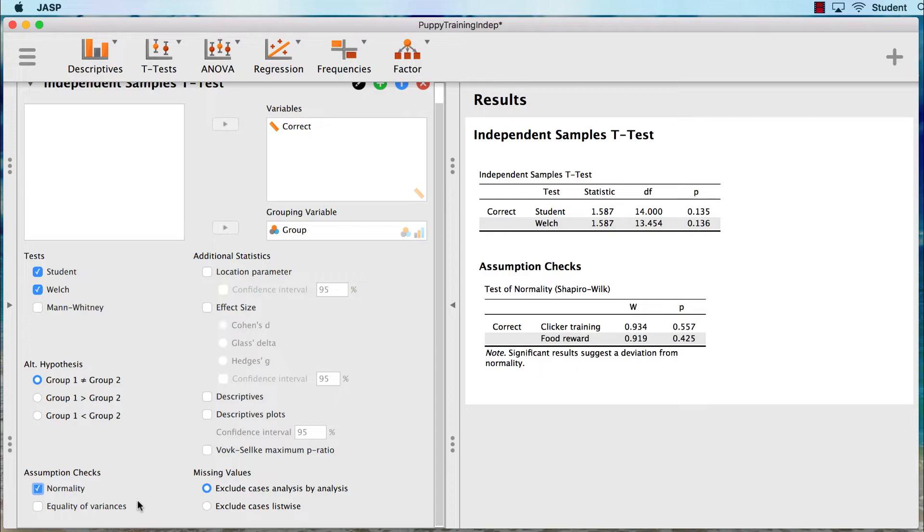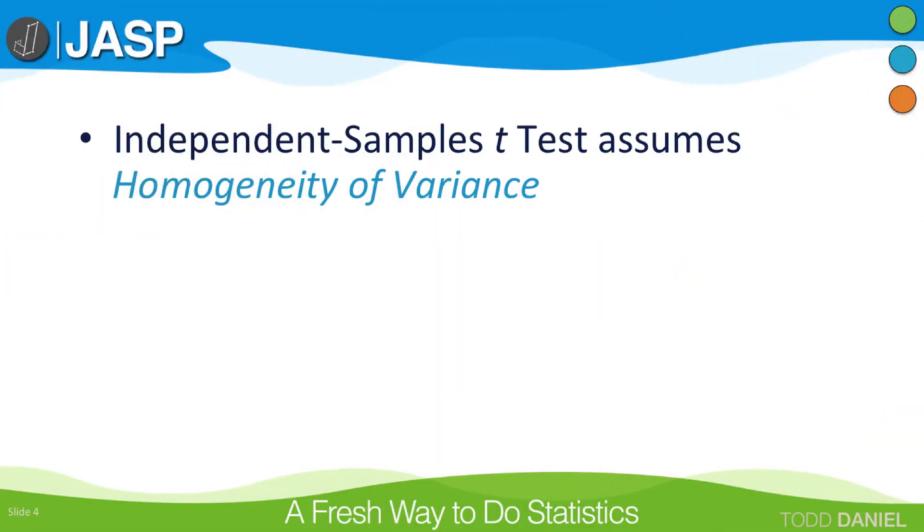The second assumption is that the two samples have approximately equal variances, and this assumption is tested using Levene's test for equality of variances. This assumption is foundational to the independent samples t-test. It's called homogeneity of variance. Now let me break that down.